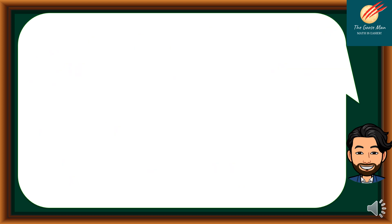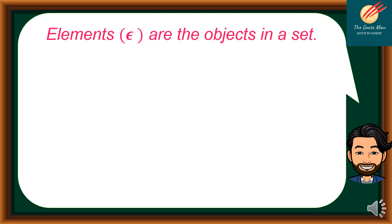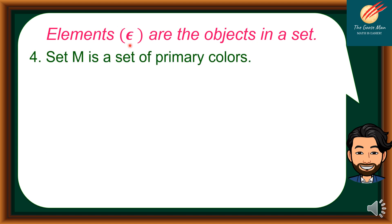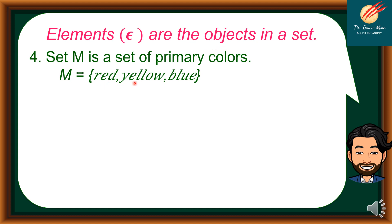Let's have another definition of terms. Elements are the objects in a set, denoted by a specific symbol. For example, set M is the set of primary colors. If we list down the elements of set M, we have red, yellow, and blue. So red, yellow, and blue are the elements of set M.